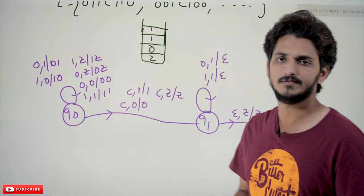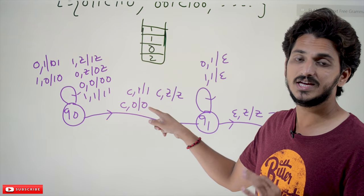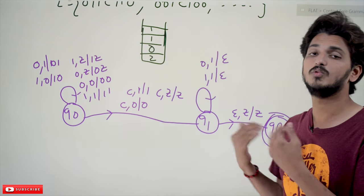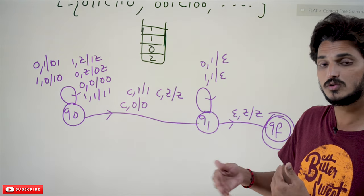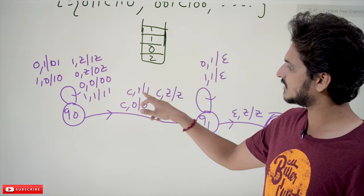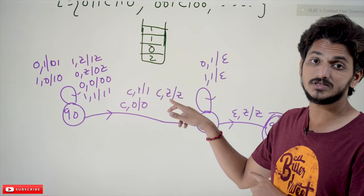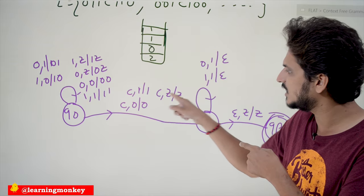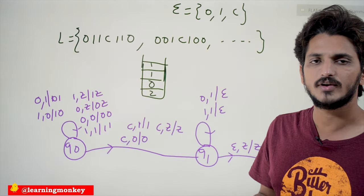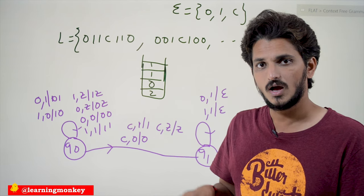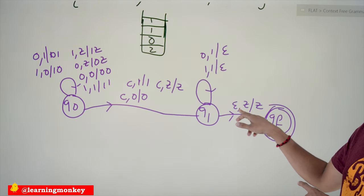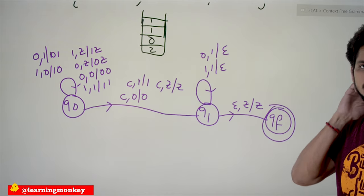Whenever the input symbol is 'c' and the stack top is '0', leave it as is — no operation — and move to q1. From q1 onwards we do the pop/matching logic. Similarly, if input is 'c' and stack top is '1', no operation, move to q1. If input is 'c' and stack top is Z — this handles the case where w is epsilon (the string is just 'c') — no operation, move to q1. Once in q1, if the input is epsilon (string is over) and stack top is Z, move to final state qf.